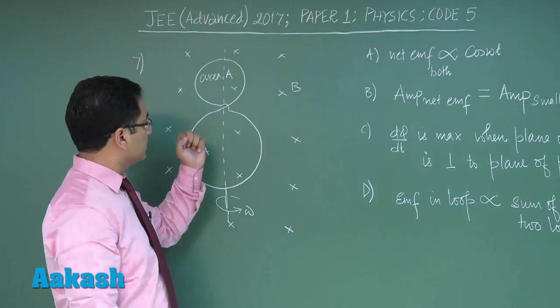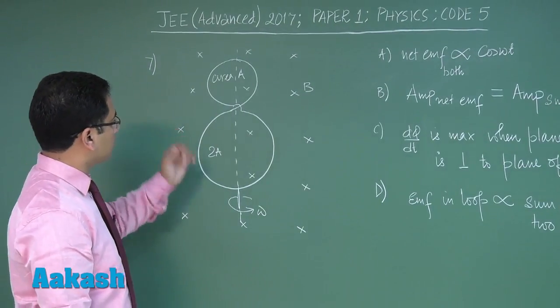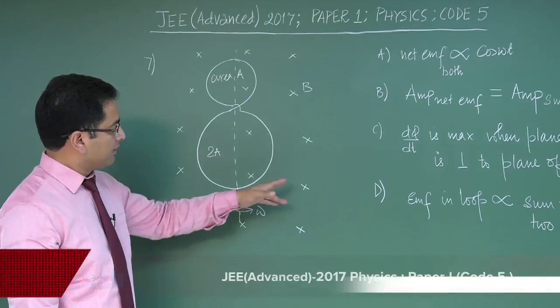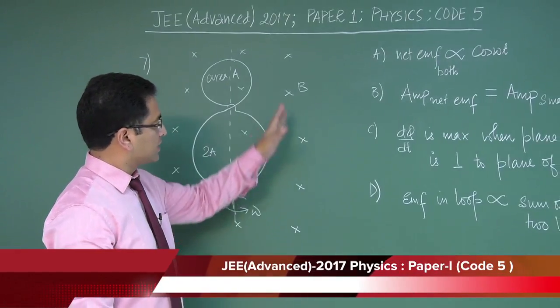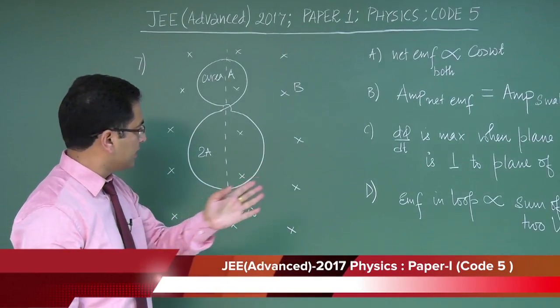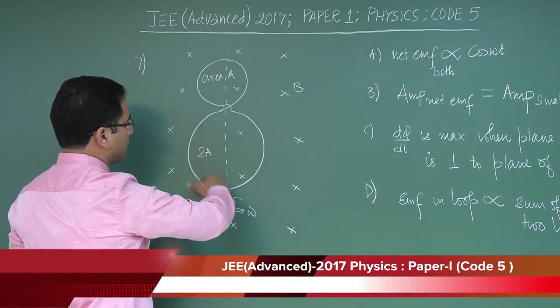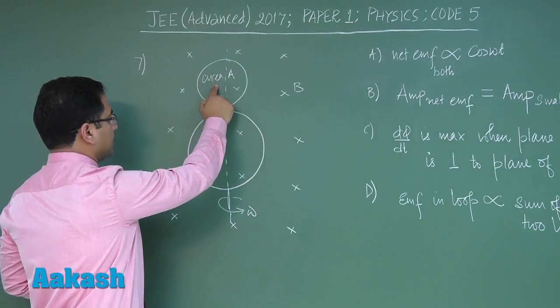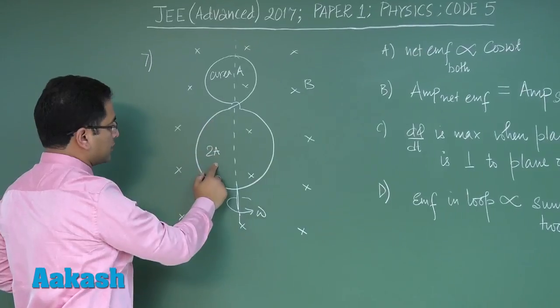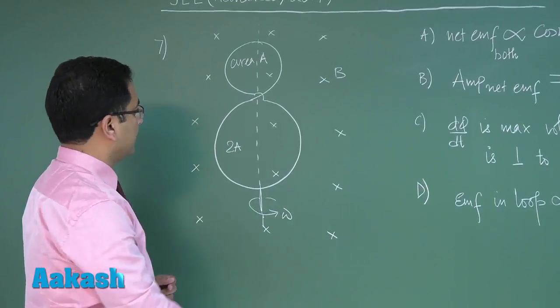Okay, question number seven is from electromagnetic induction. There is a magnetic field into the plane of the paper. There is a twisted loop where this loop has area A and the other loop has area twice of A.